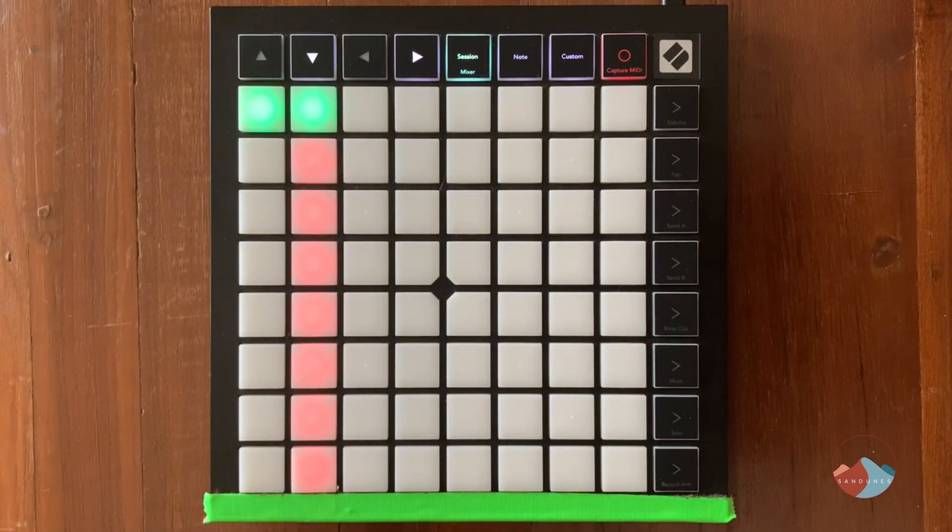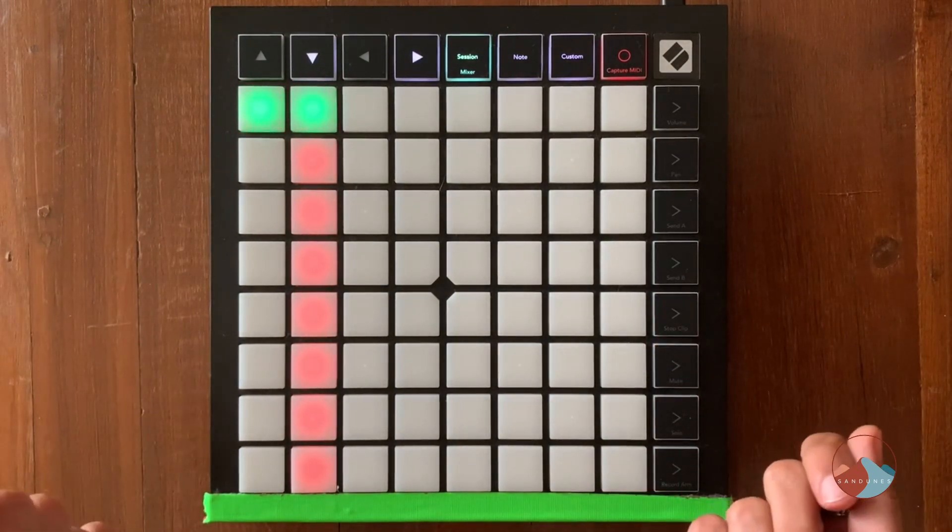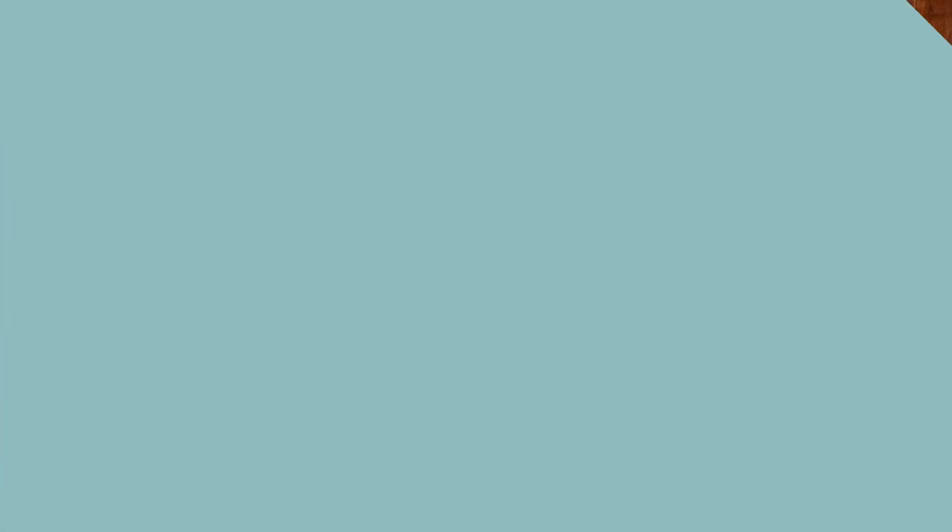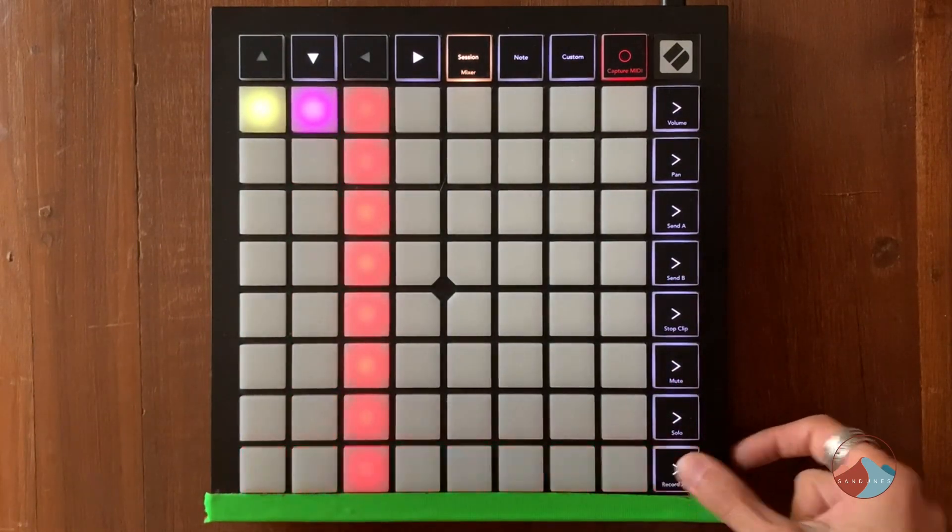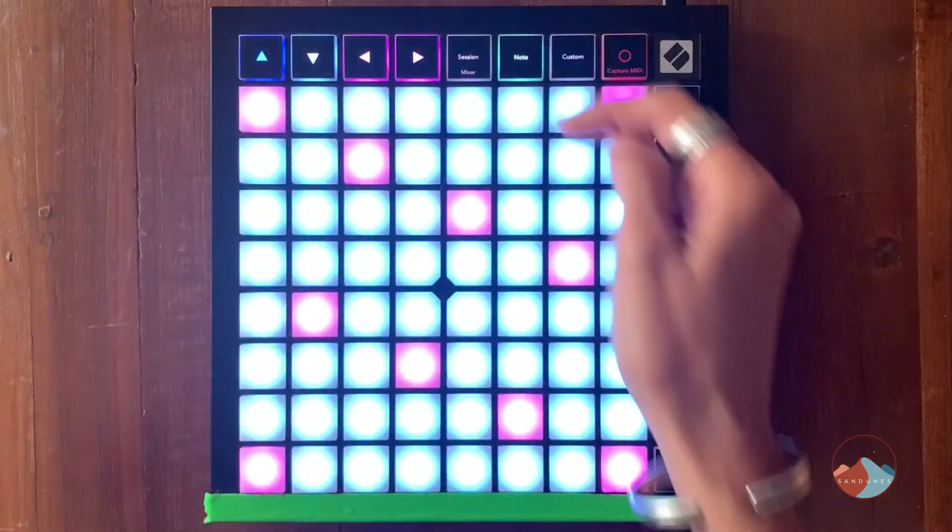I can now hear back what I've just recorded into this clip. I'm pretty happy with that and I'm now going to move on to a lead. Now that I've got chords and a groove, I am going to record arm the third track for a lead line.